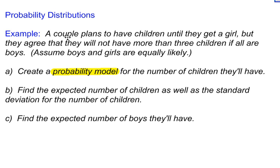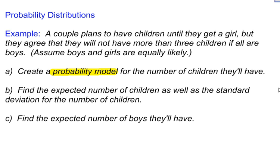Here's another example of working with probability distributions, sometimes also called a probability model — they mean the same thing. Here's our example: a couple plans to have children until they get a girl, but they agree they will not have more than three children if all are boys. We assume boys and girls are equally likely, and we want to create a probability model for the number of children they'll have.